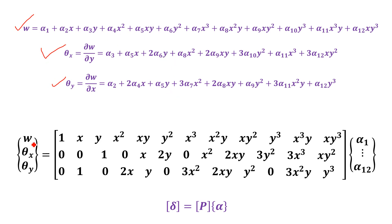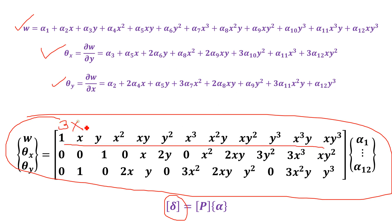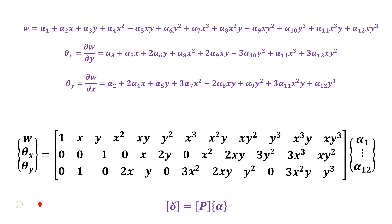Writing these three expressions in matrix form gives: {δ} = [P]{α}, where δ is the vector of W, θx, θy; α1 to α12 are the generalized coordinates; and P is the parametric matrix of order 3×12 (3 rows, 12 columns). P is the parametric matrix, α is the vector of generalized coordinates, and δ is the vector of nodal displacements.